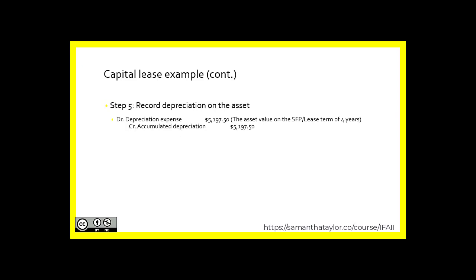Step five: record depreciation on the asset. We capitalized the present value of the lease payments at just over $20,000, and the lease term is four years. Since there is no automatic transfer of title and no bargain purchase option, we depreciate over the lease term. So $20,790 divided by four years gives us depreciation of $5,197.50 each year, with a corresponding credit to accumulated depreciation.